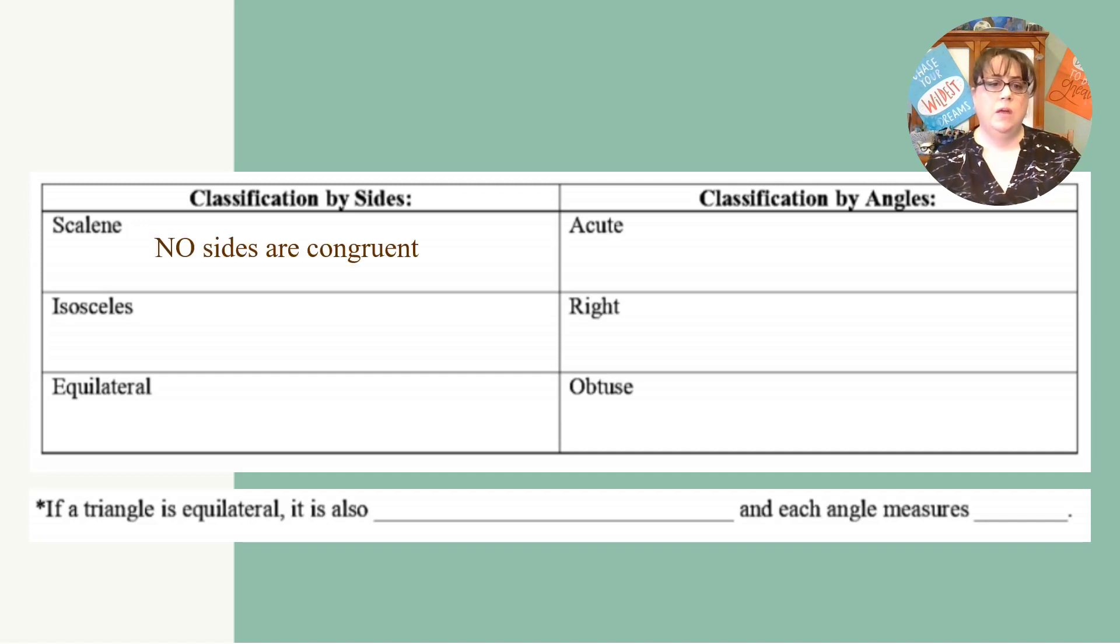A scalene triangle has no sides congruent, where an isosceles triangle has two sides congruent, and an equilateral triangle has three sides congruent.